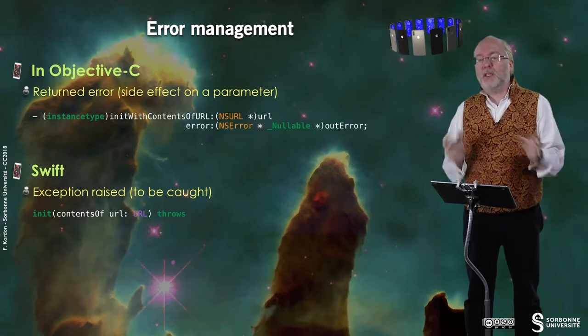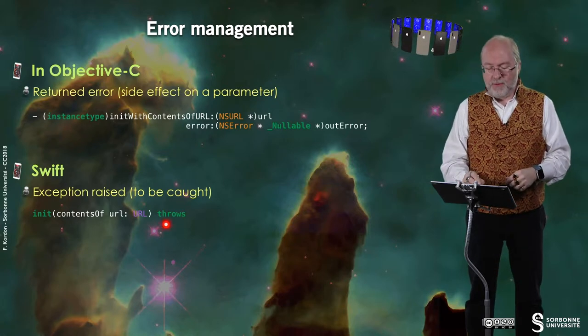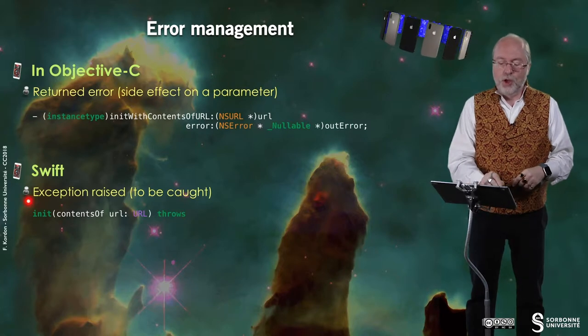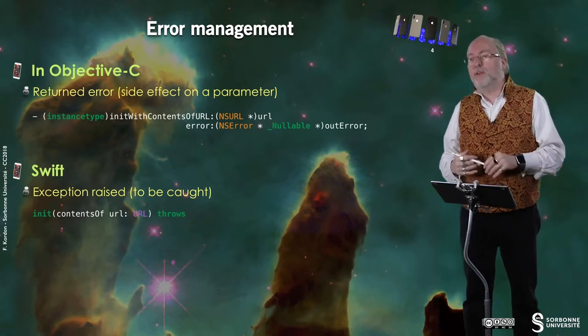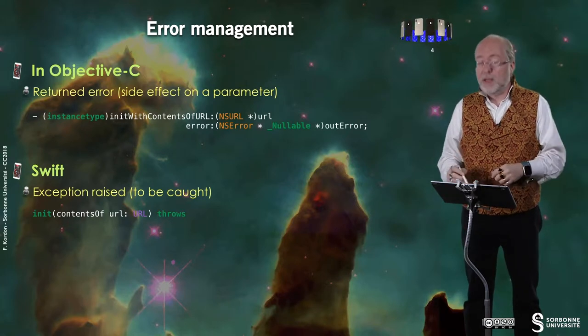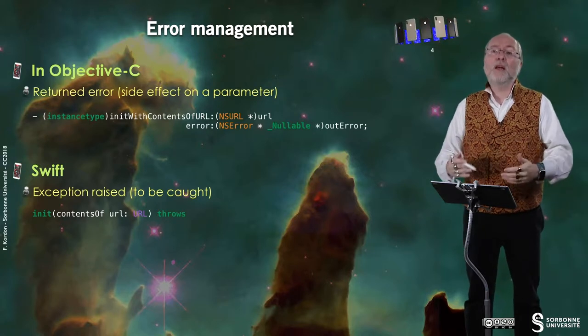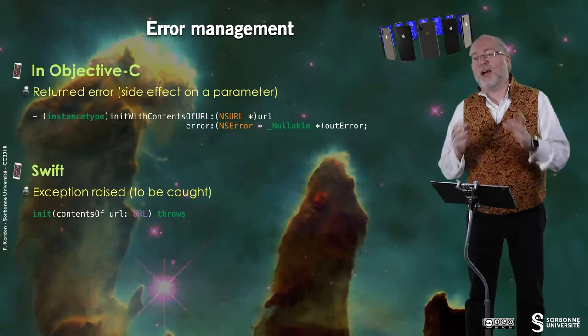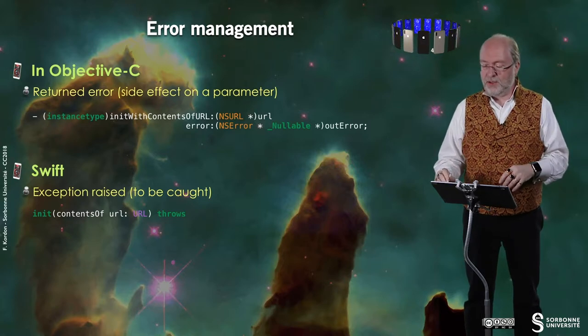In Swift, it's totally different. The error is notified to you thanks to an exception. So init throws exception. So you see that there is an exception mechanism in Swift. We had not presented it, but it's very similar to the one you have in Java, for example, and you will see that in some code. And so it means that you will have to encapsulate this code in, it's not a try-catch, it's a do-catch, but besides that it's very similar to what you have in Java.